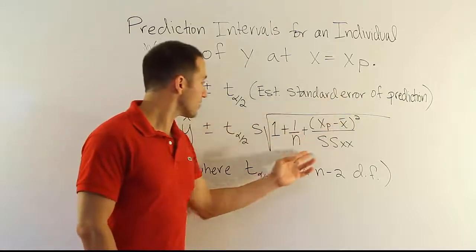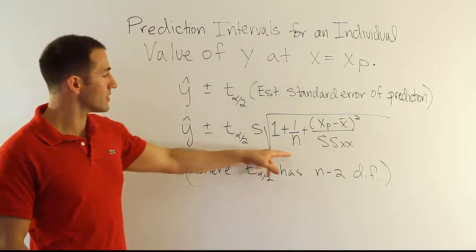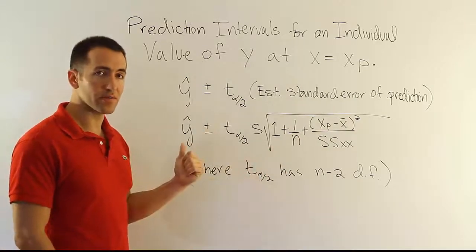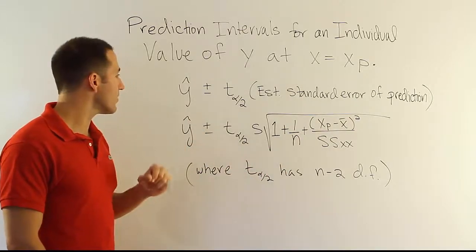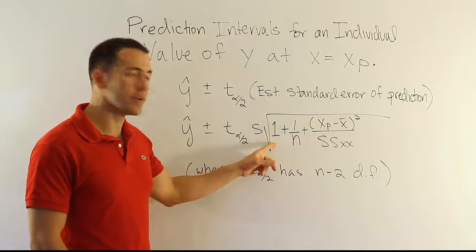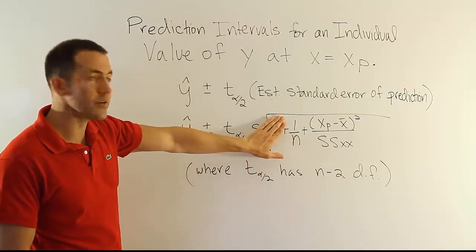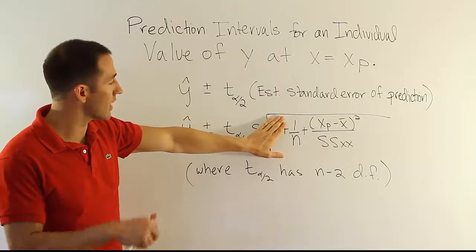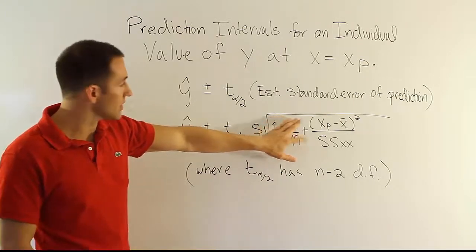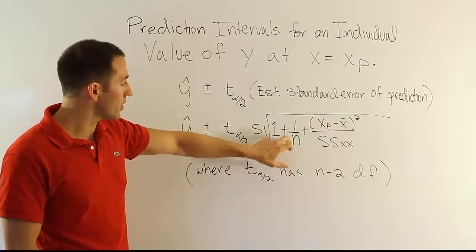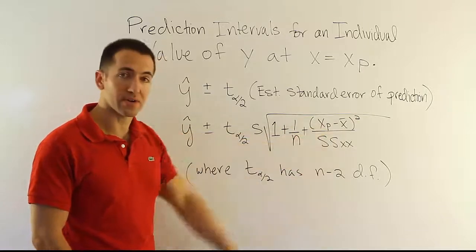That standard error of prediction is expressed here, and it looks very similar to the standard error we had in those confidence interval formulas before, except you'll notice there's a 1 here in front. The other formula just had two terms under the radical—1 over n plus that expression. Now we have 1 plus 1 over n plus that expression.